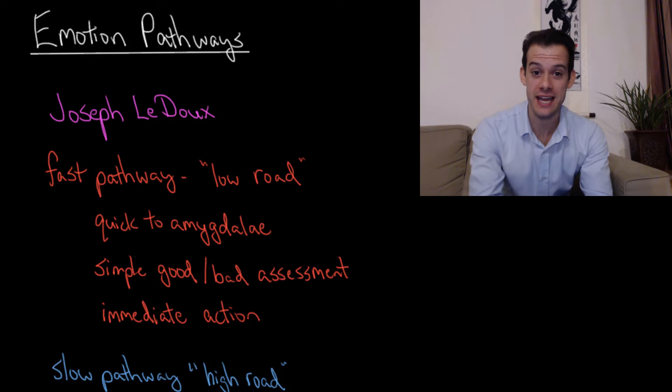Hi, I'm Michael Corayer and this is Psych Exam Review. In the previous video, we looked at parts of the brain that are involved in emotional processing. And in this video, we're going to take a look at how information actually gets to these different areas of the brain. And so this brings us to some work by Joseph LeDoux. I'll post a link in the video description to his book, The Emotional Brain, if you're interested in reading more about this.